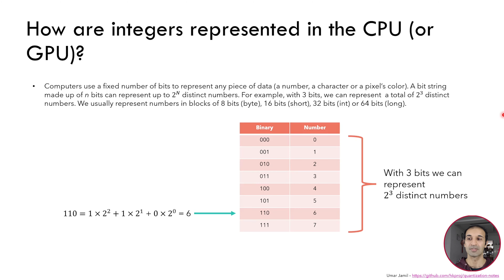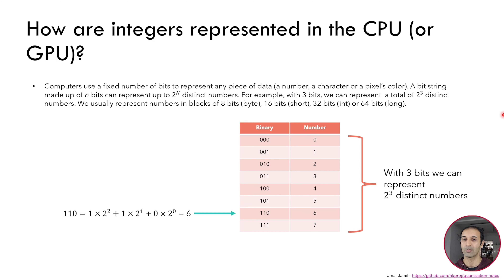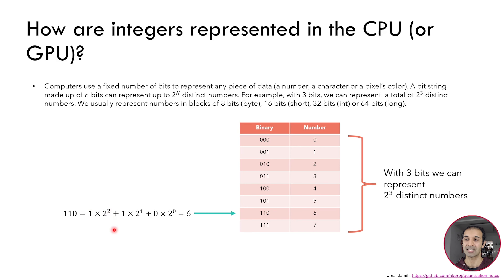Computers use a fixed number of bits to represent any piece of data — for example to represent a number, or a character, or a pixel color, we always use a fixed number of bits. A bit string that is made up of n bits can represent up to 2 to the power of n distinct numbers. For example with 3 bits we can represent 8 possible numbers from 0 to 7, and for each number you can see its binary representation. We can always convert the binary representation to decimal by multiplying each digit with 2 to the power of its position inside the bit string.